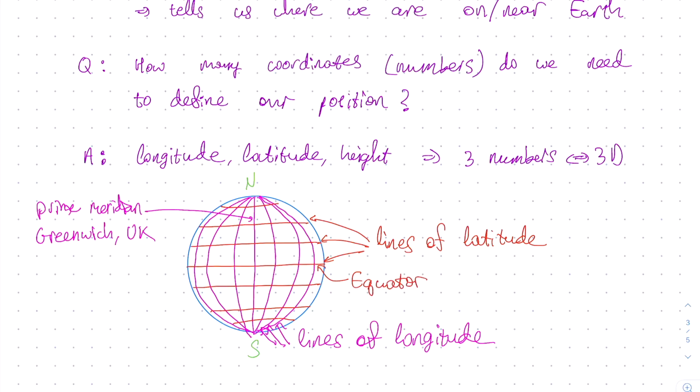Now let's go ahead and make an example of how to define our position near the earth. Suppose we define our position as 30 west, 80 north, and 400 kilometers up. So what do we do?